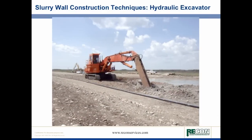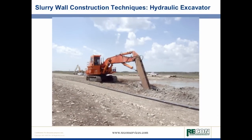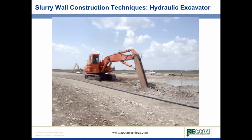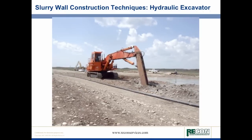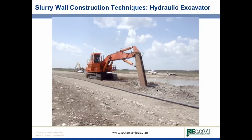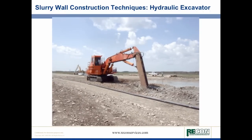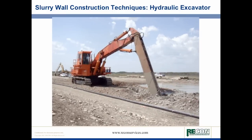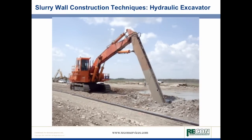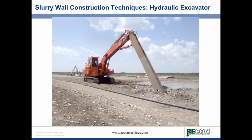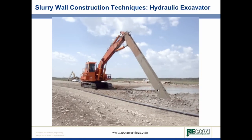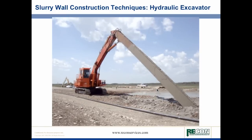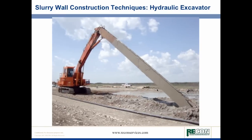This video gives you an illustration of a slurry wall being constructed using the trenching method. This particular excavator has a capacity to dig trenches in excess of 90 feet. This particular wall is actually 185 feet in depth, but the first 90 feet is being constructed with a hydraulic excavator using the continuous trenching method.